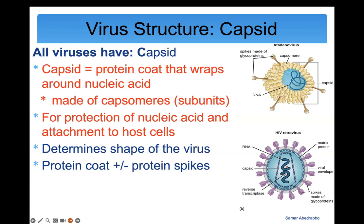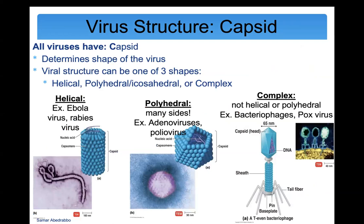The shape of viruses can be split into different categories. Helical viruses — like Ebola — look helical. Polyhedral viruses, meaning many-sided, include poliovirus which can cause paralysis. Complex viruses include bacteriophages. The key point is that viruses can have different shapes, and those shapes are determined by the capsid.